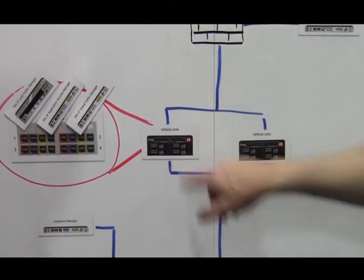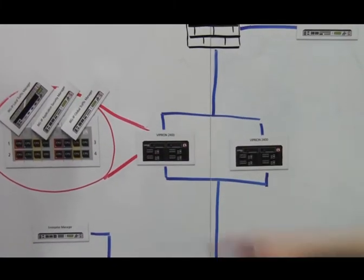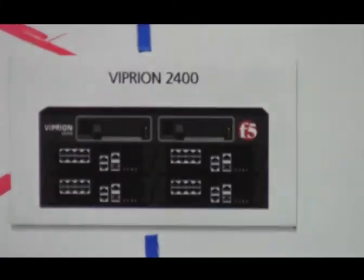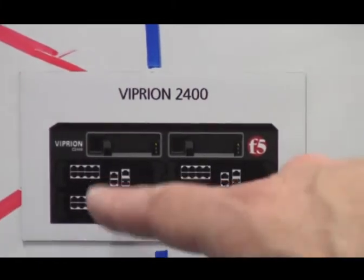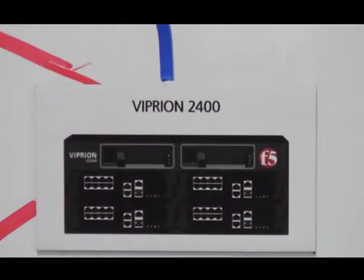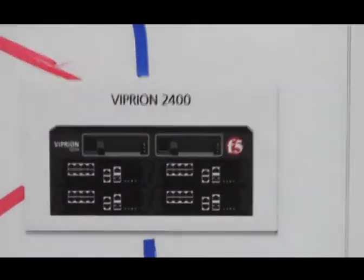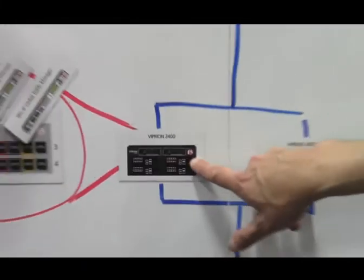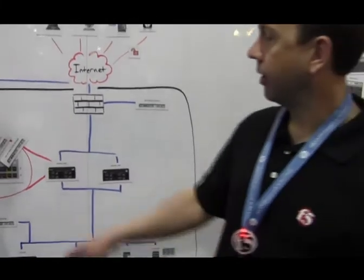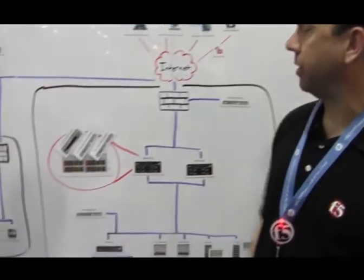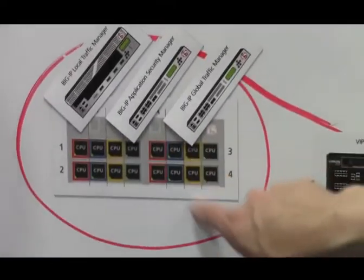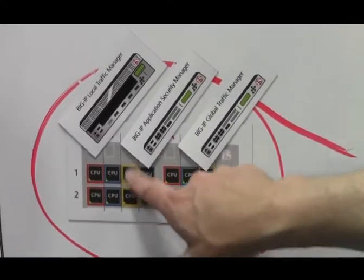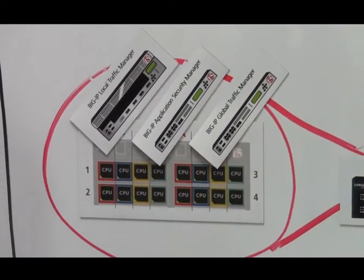Each of these blades will linearly scale. So when you put the first blade in, you get a certain level of performance, and then when you keep adding blades, it linearly multiplies the performance out. Also available on this is our VCMP technology, which allows you to split up the chassis into virtual instances of the BIG-IP.